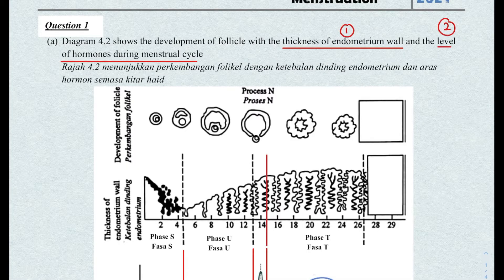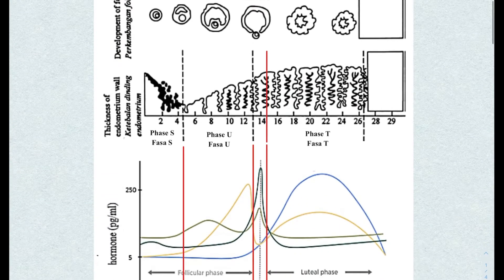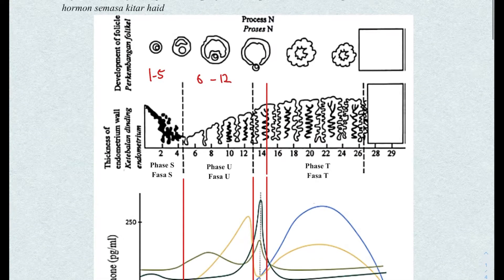In your typical menstrual cycle question, you usually see these two graphs. Number one showing the thickness of the endometrium wall, and number two showing the hormones throughout the menstrual cycle. No matter which graph, first break it down into the four phases. Day 1 to 5 is menstruation. Day 6 to around day 12 is your repair phase.